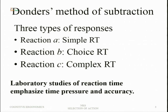The Donders method of subtraction involves three types of responses. Type A is a simple reaction time situation — one stimulus and one response. Reaction B is choice reaction time, where there are alternative actions possible and a choice is made for one of them — that is why we refer to selection of action. Then Reaction C is complex reaction time. Laboratory studies of reaction time emphasize both time pressure and accuracy.